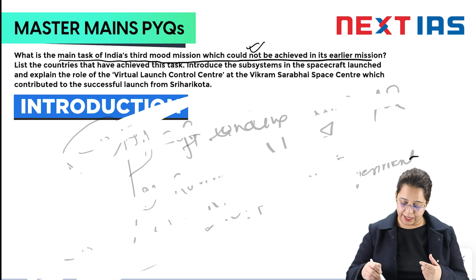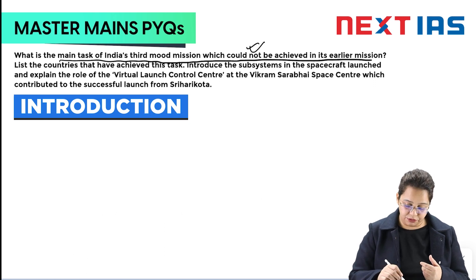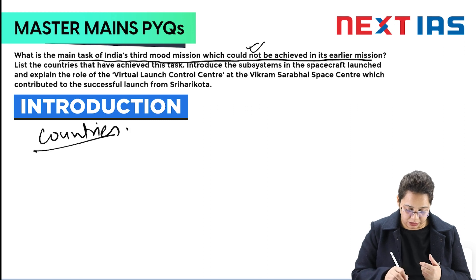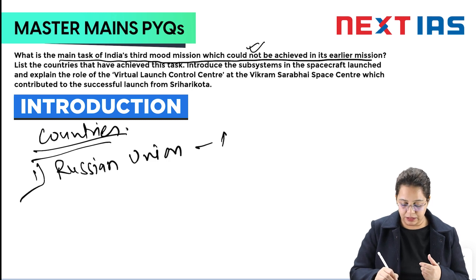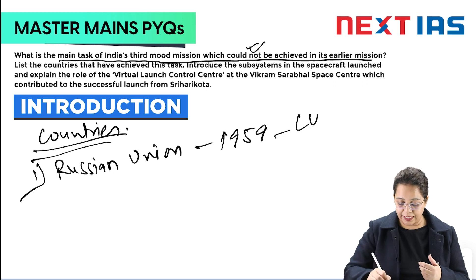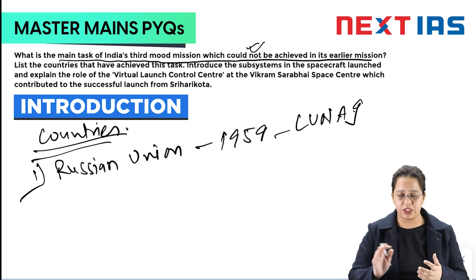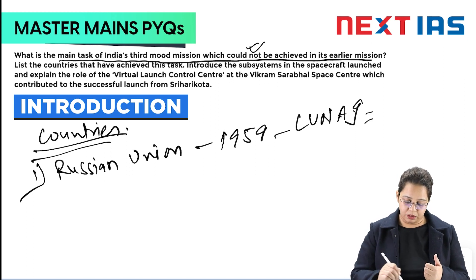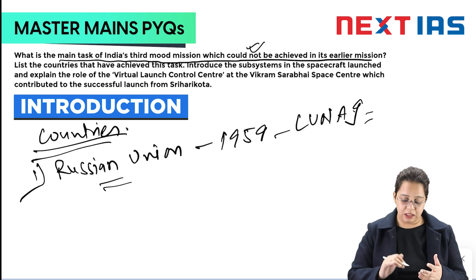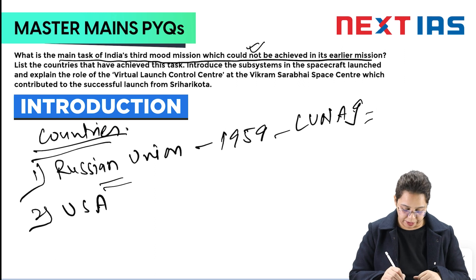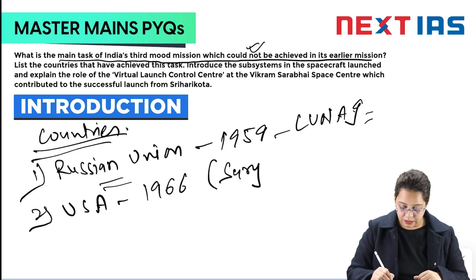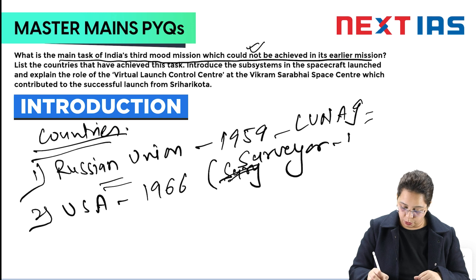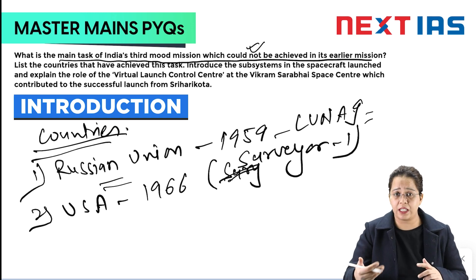The second part of the question asks about the countries that achieved soft landing before India. The first is the Soviet Union, which did this in 1959 with the Luna 9 mission. The second is the United States of America, which did the same in 1966 with the Surveyor 1 mission.